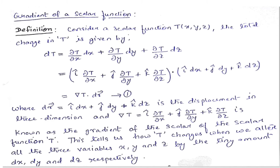Now, this gradient of a scalar function — delta T — will always give you a vector. Why? Because I have written it as a dot product of two vectors, and the dot product of two vectors is always a scalar. So this delta T, the gradient of a scalar quantity, will always give you a vector quantity. For example, when we talk about the electric field, we can write E as the negative gradient of potential: E equals minus delta V. Now V, the potential, is a scalar function, but E, the electric field, is a vector quantity. So the conclusion is that the gradient of a scalar function is always a vector quantity.